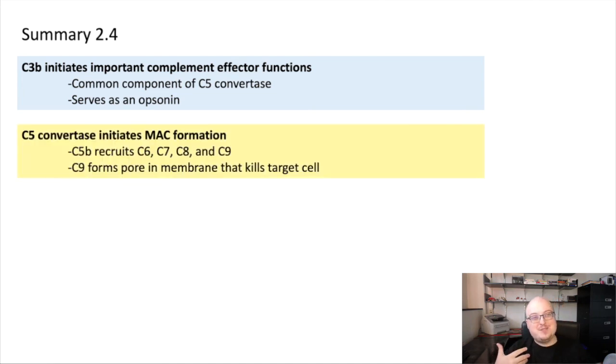The C5 convertase, which is downstream of C3B, as I said, is important for creating the membrane attack complex, or MAC. C5B recruits C6, 7, 8, and 9 in sequence, and polymers of C9 form pores in membranes, which disturb their membrane integrity, ultimately resulting in their death.